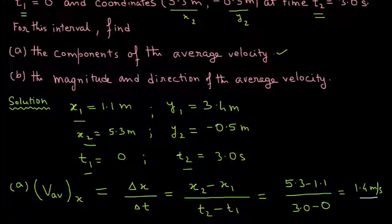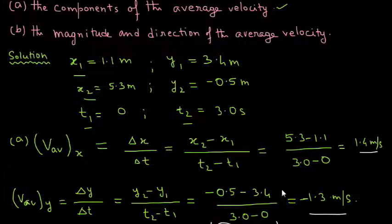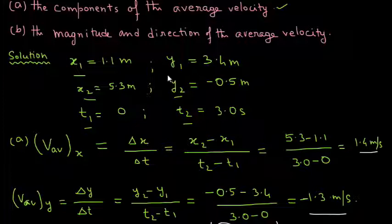Similarly, the y component of average velocity is v_avg_y = Δy / Δt = (y2 − y1) / (t2 − t1) = (−0.5 − 3.4) / (3 − 0), which gives −1.3 m/s.